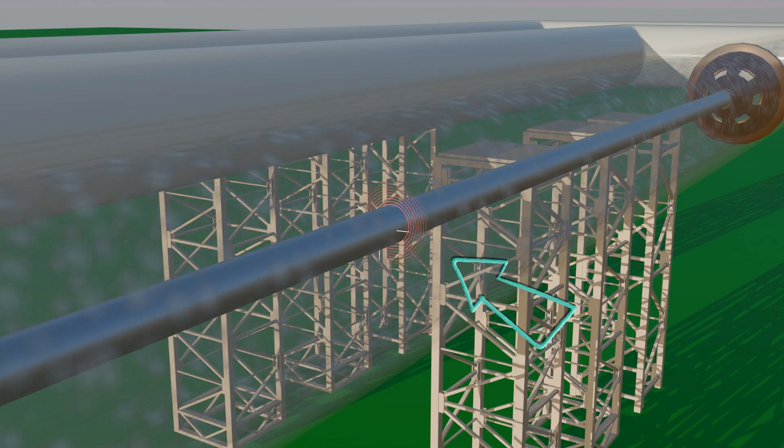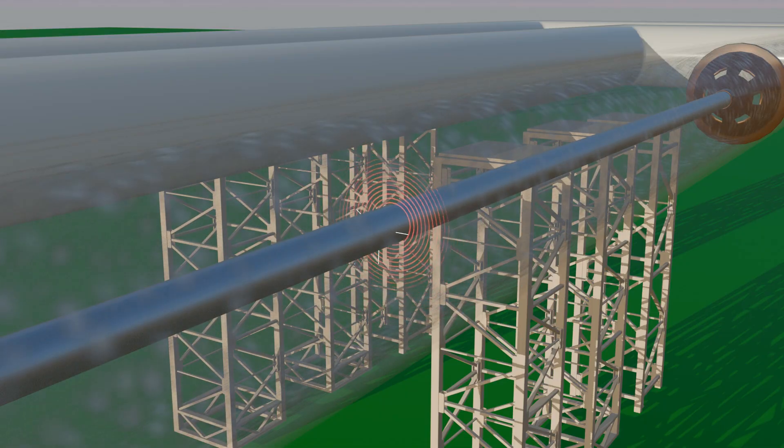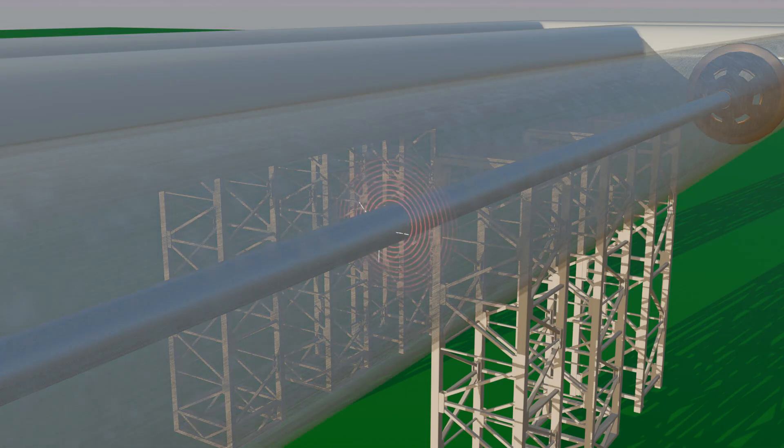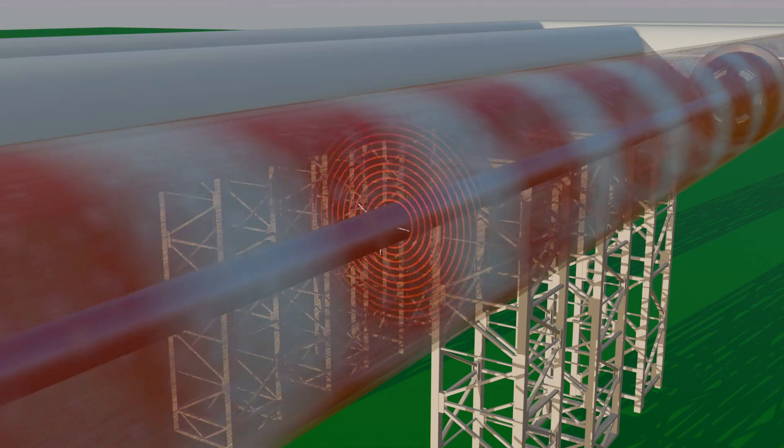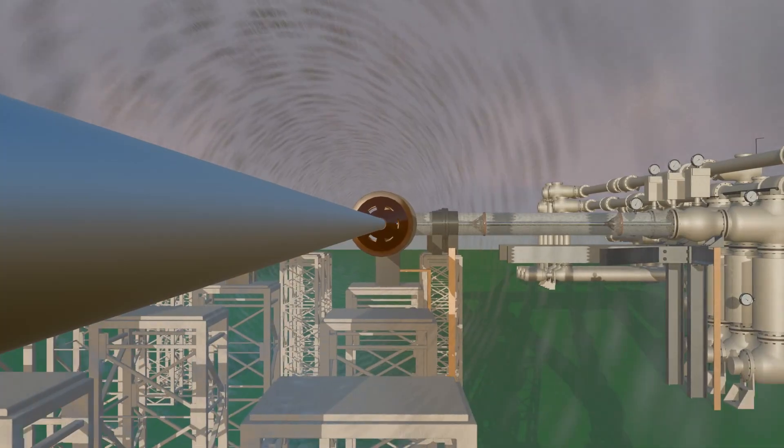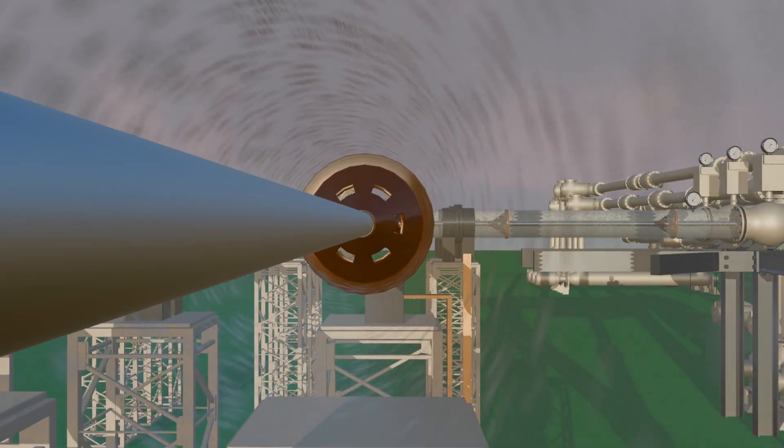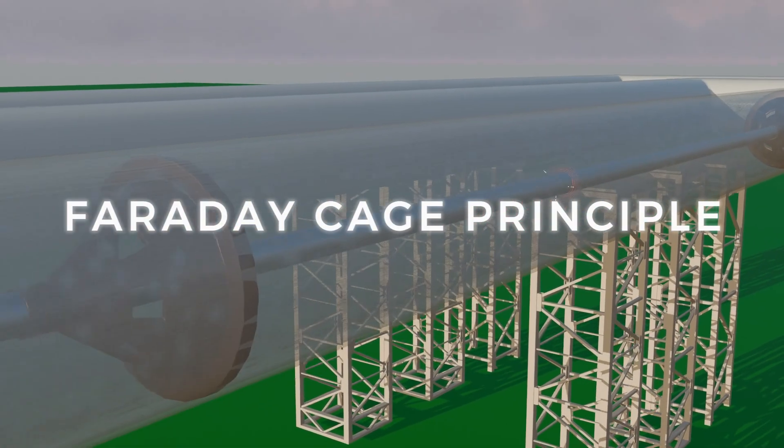However, SF6 reduces ionization but does not fully block electric or magnetic fields. Some field still reaches the outer metallic enclosure, which means high voltage can be induced there as well. But once these fields strike the enclosure surface, they terminate because the system follows the Faraday cage principle.